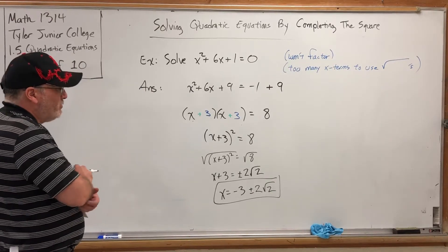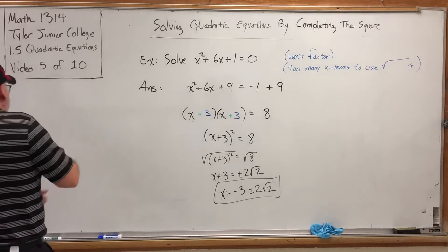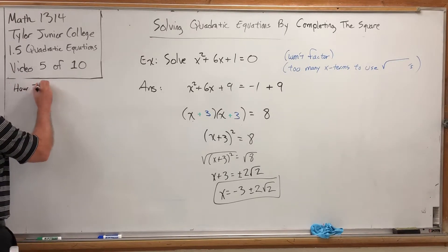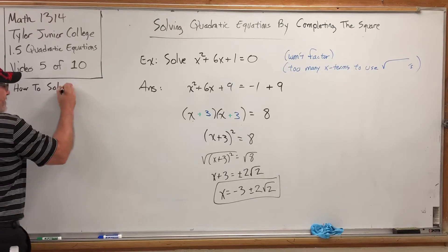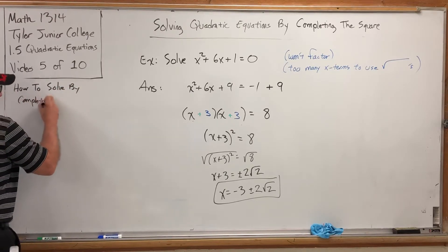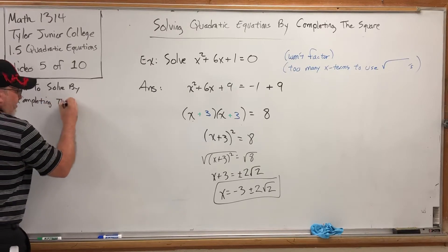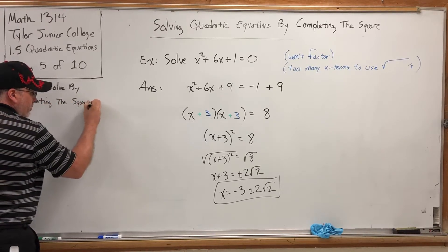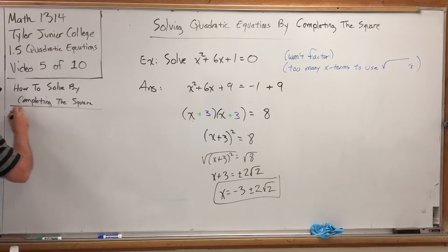So, can we kind of summarize what just happened here? Well, we can. I'm going to go ahead and start a how-to list, how to solve by completing the square. And we're going to set up another example. But this time, as we go through it, we're going to categorize the steps that we do.